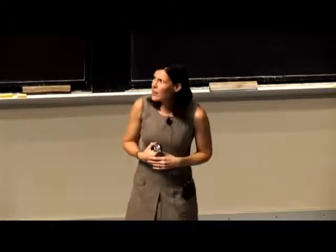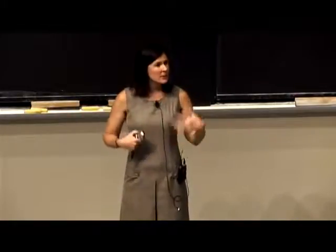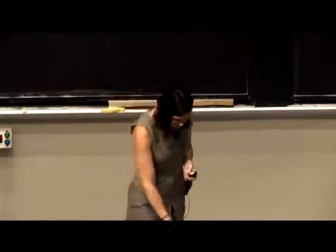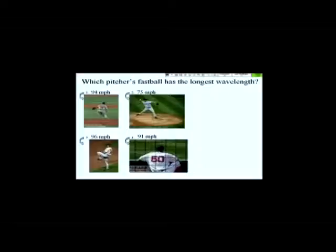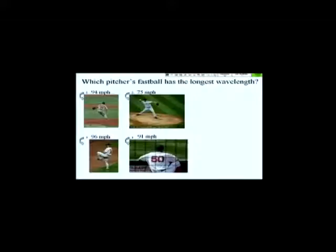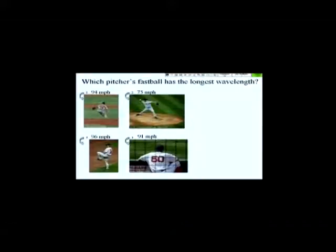So that's for Matsuzaka. Even if you don't memorize all the wavelengths for all the pitchers, I would expect you — whether you're a Red Sox fan or not — to be able to look at a list of different pitchers and their average fastball velocity and tell me who has the longest or the shortest wavelength. So let's go to a clicker question. We have four different pitchers: first, Matsuzaka at 94 miles per hour — click one if you think he has the longest wavelength.